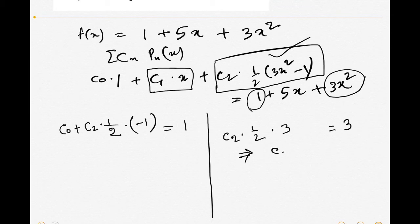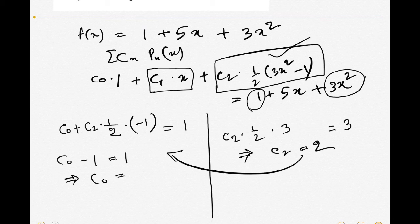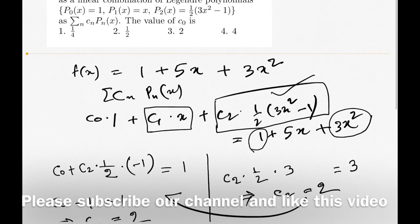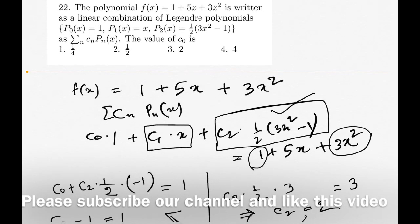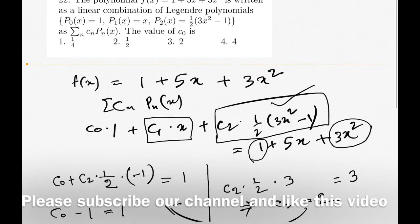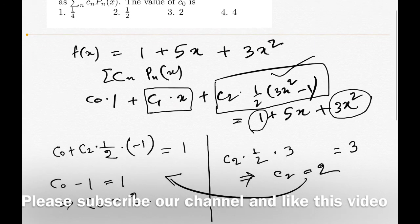So we put this value here, then we get c₀ - with c₂ equal to 2 - so c₀ - 1 equal to 1. This gives us c₀ equal to 2. If we go to the problem, we see that the third option is correct, so the value of c₀ is exactly equal to 2.